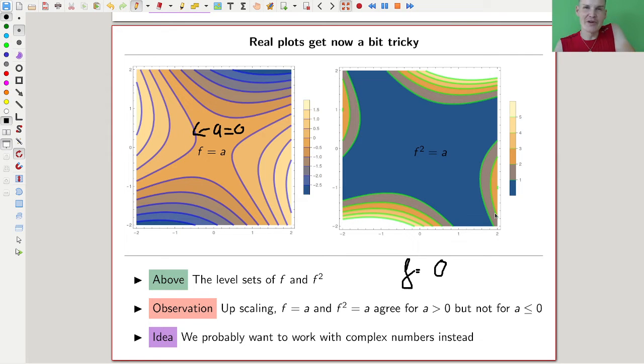Here what I did is I plotted the level sets. So instead of f equals zero, I can just plot f, and then it spits out the levels.